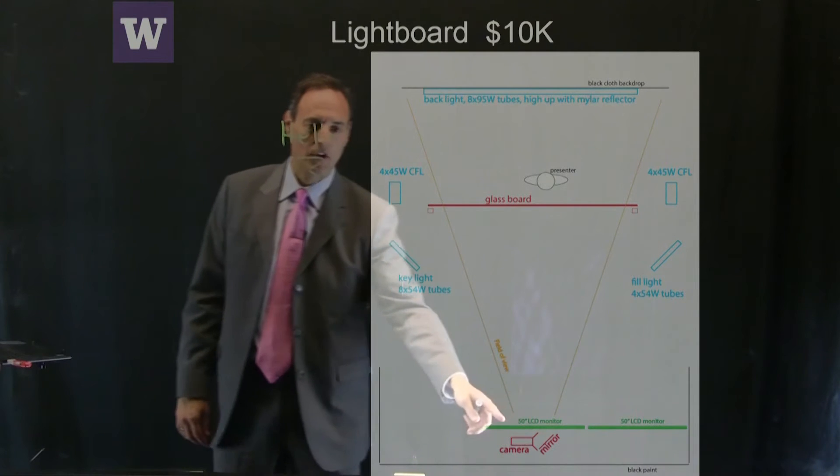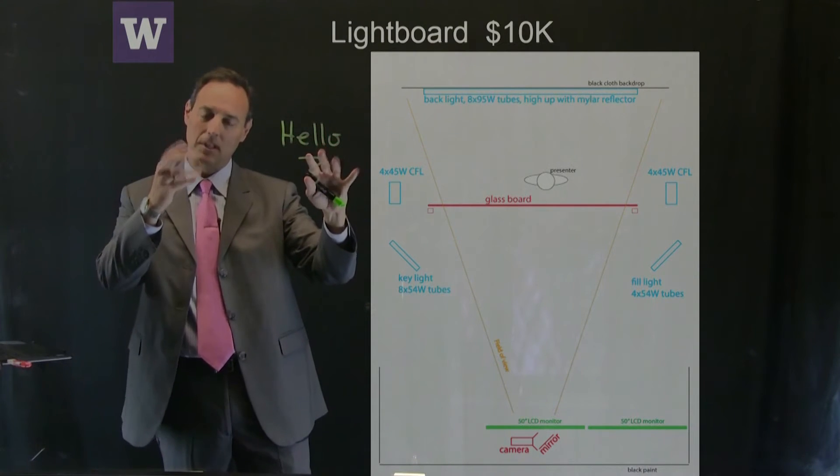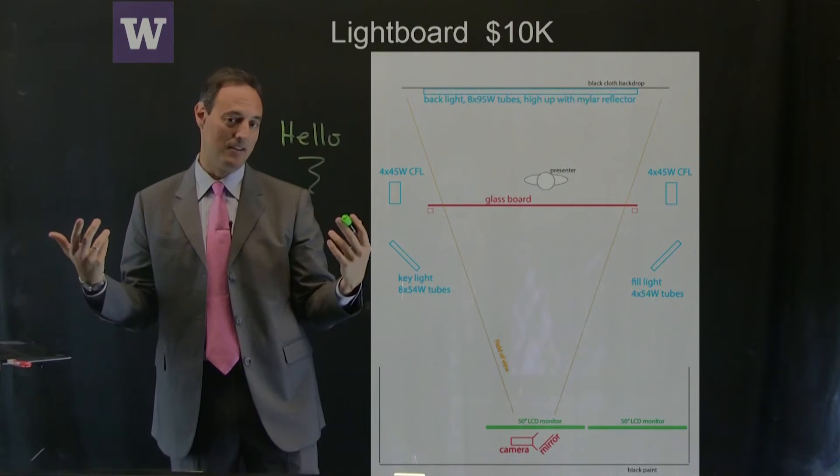there's a camera with a mirror in front of it. When I write this way, the mirror flips it. It would look backwards, but the mirror flips it, making me look left-handed.